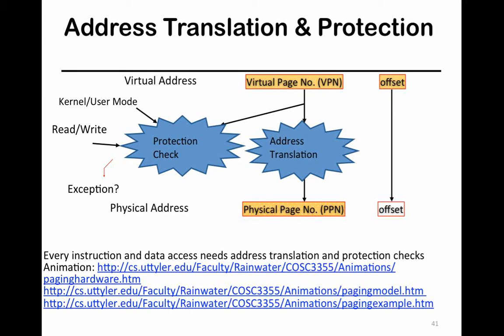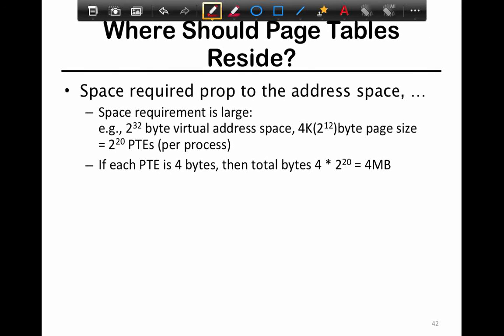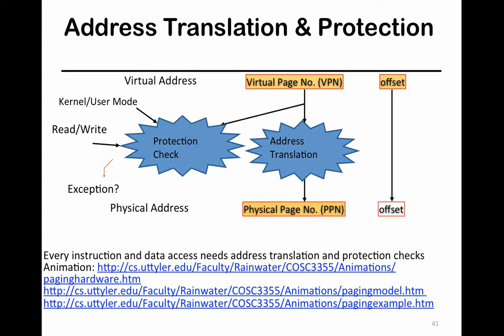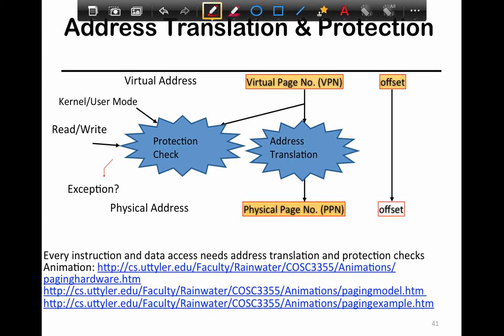So what you have is your virtual page number. There are two things that happen as soon as the address is issued. First, you decouple the chunk and the offset, and that just travels directly. Note that there are no bounds checks, unlike segmentation — in segmentation you would have to do a bounds check, but not here.